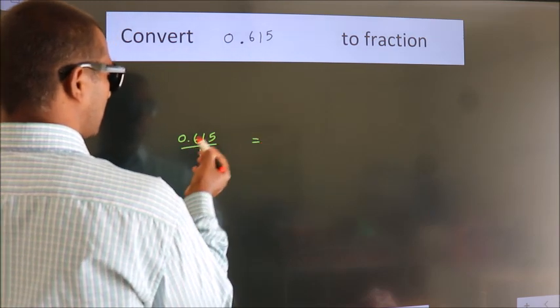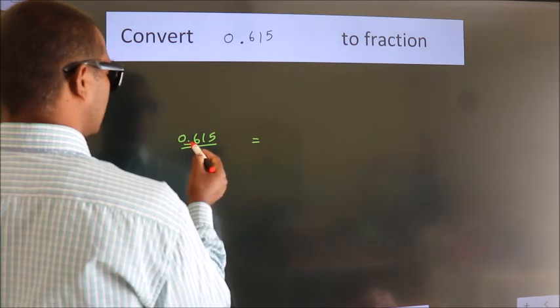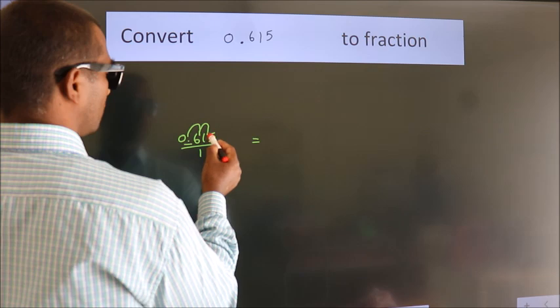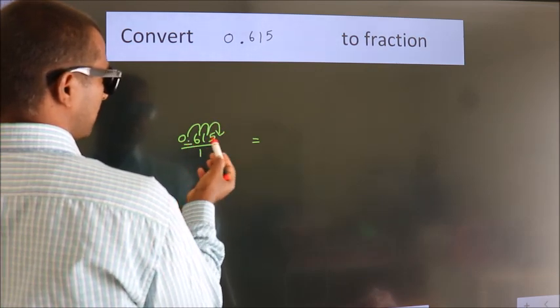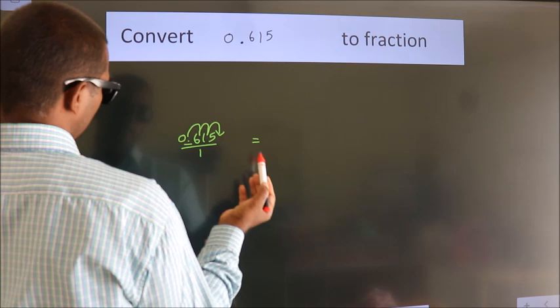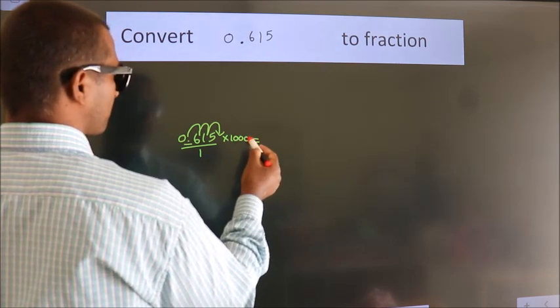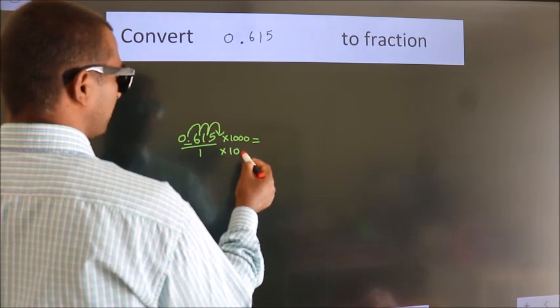To convert this to fraction, we have to move this decimal after 1, 2, 3 numbers. To move this decimal after 3 numbers, multiply it with 1000. Whatever you are multiplying in the numerator, in the denominator also do the same.